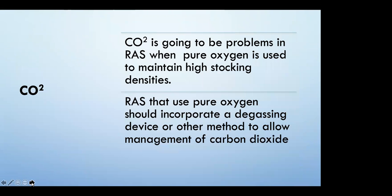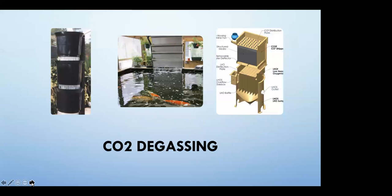CO2 is definitely going to be a problem in your system when pure oxygen is used, because your density is much greater and you're producing CO2 at a much higher volume. RAS that uses pure oxygen should definitely incorporate some type of degassing device. Don't forget CO2 is a heavy gas — we had a client whose CO2 levels kept climbing despite good degassing. The problem was his blower was positioned low, so CO2 pooled down low and the blower was actually re-gassing CO2 into the system instead of air.